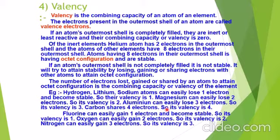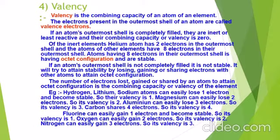Fluorine can easily gain one electron and become stable, so its valency is one. Fluorine has seven electrons in its outermost shell and requires one more to complete its octet. Oxygen can easily gain two electrons, so its valency is two — its configuration is 2,6, and since six are present, two more are required. Gaining two electrons is easier than losing six. Nitrogen can easily gain three electrons, so its valency is three — its configuration is 2,5, and gaining three electrons is easier than losing five.